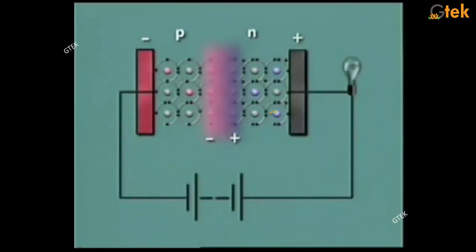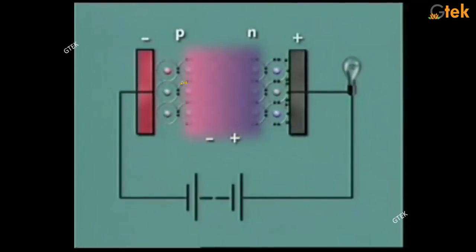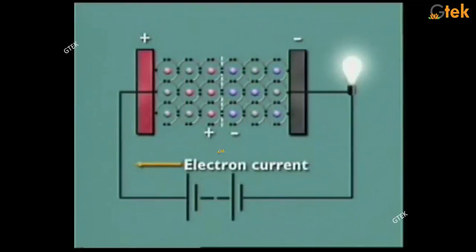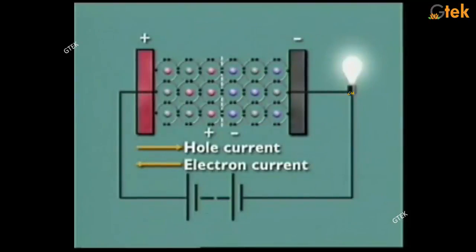You are able to see there is a negative terminal here, so current is coming from there, and you are able to see the positive terminal here. So, the p-type is connected to the positive terminal and n-type to the negative terminal of the battery. The hole current will start moving in one direction and the electron current will start moving in the other direction. You are able to see the light is on — this is how, using a p-n junction, you are able to generate electricity.